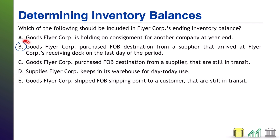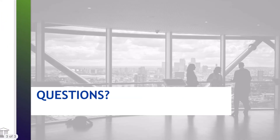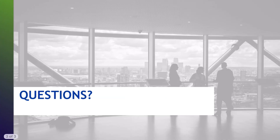So of all of these, only B would be included in FlyerCore's ending inventory balance. That's it for determining inventory balances. Hope you found this helpful and hope you join me for another video.